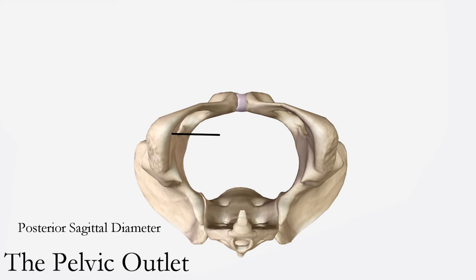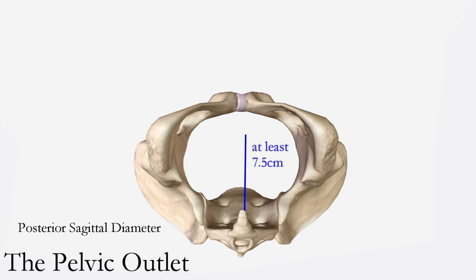To measure the posterior sagittal diameter of the outlet, draw an imaginary line along the transverse diameter and approximate its center, then connect that midpoint to the sacrococcygeal joint. The distance between the sacrococcygeal joint and the center of the line between the ischial tuberosities approximates the posterior sagittal diameter, which averages 7.5 cm.